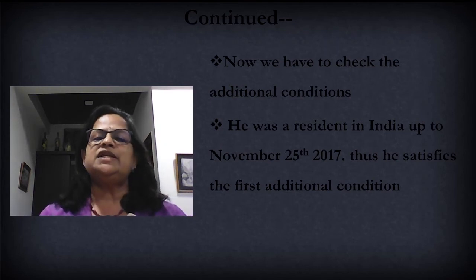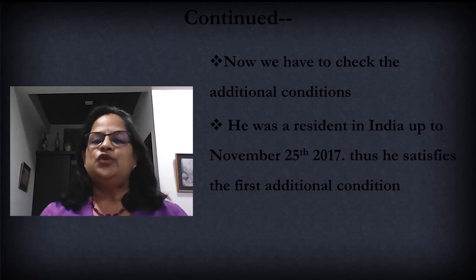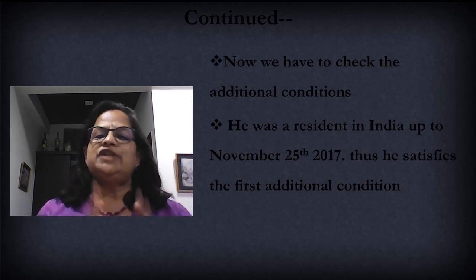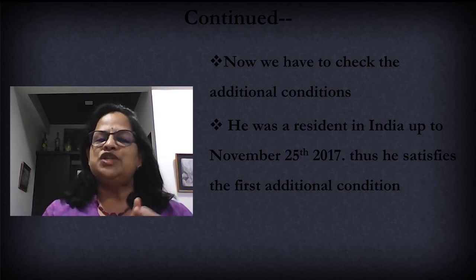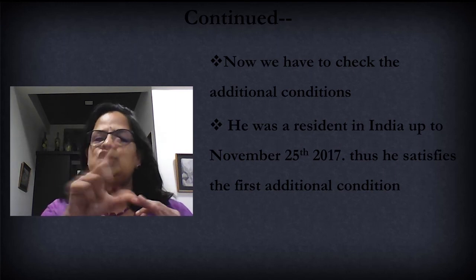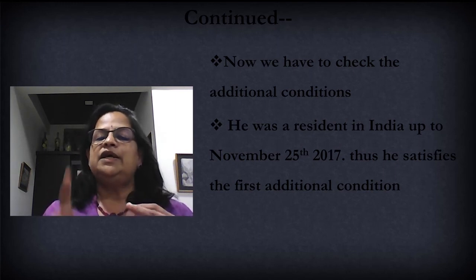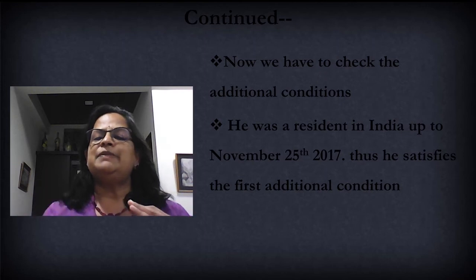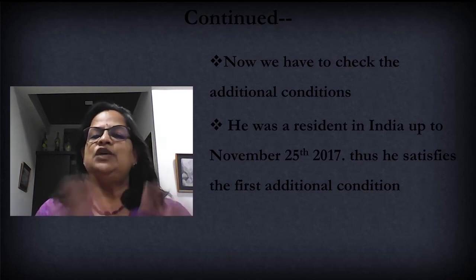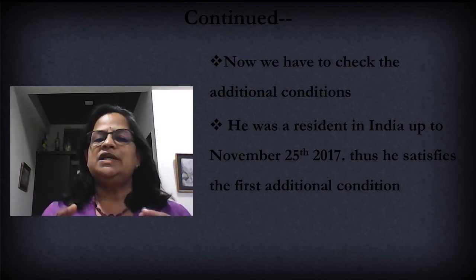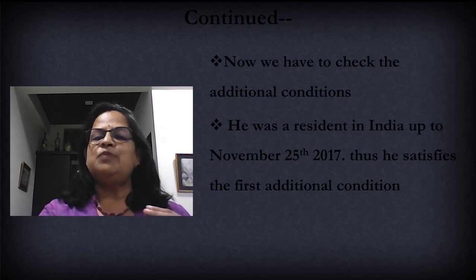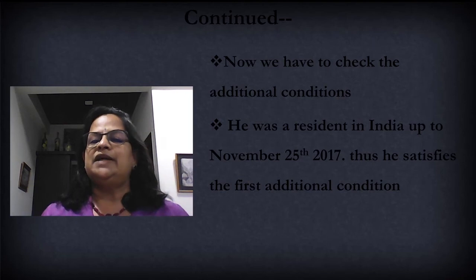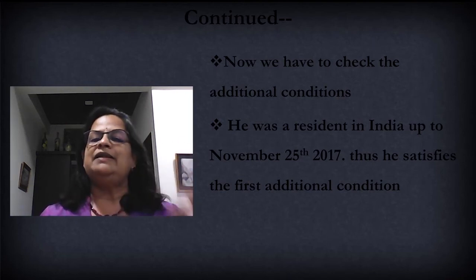Now we have to check the additional conditions. One basic condition is satisfied, so he can be a resident and ordinarily resident, or a resident and not ordinarily resident. We have to check the two additional conditions. The first one: he should have been a resident in India in two out of ten immediately preceding previous years. You don't have to calculate that because he was a resident in India up to November 25th, 2017 — he was living in India as a resident.